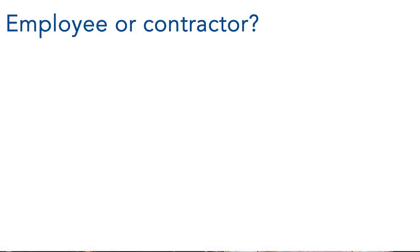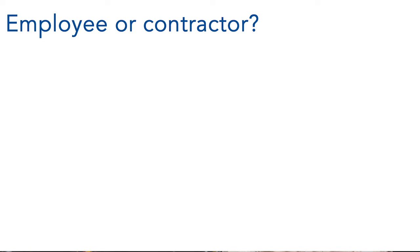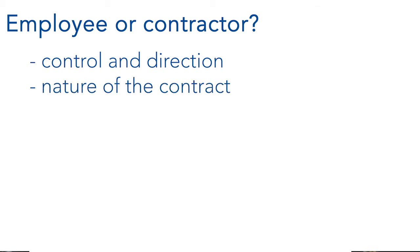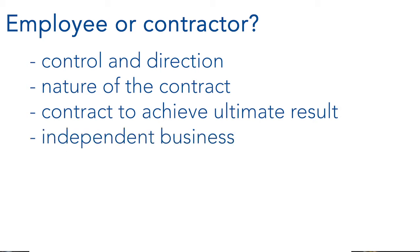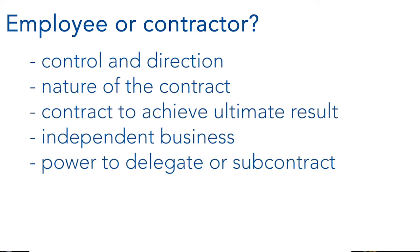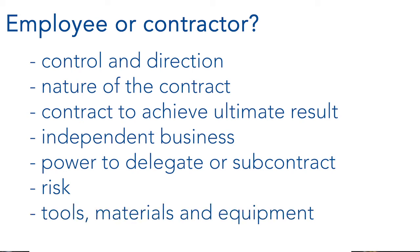Other factors to be considered in establishing whether someone is an employee or a contractor include: the degree to which control and direction is exerted by the business over the person; the nature of the contract and the practical relationship between the business and the person; whether the contract is focused on achieving an ultimate result rather than what is provided during the performance of the contracted task; whether the person engaged is carrying on an independent business; whether the power to delegate or subcontract some or all of the contract exists; who bears the risk associated with the contract; and who provides the tools, materials and equipment required to fulfil the contract. These and other factors are set out in greater detail in Revenue Ruling PTA 038, which is available on our website.